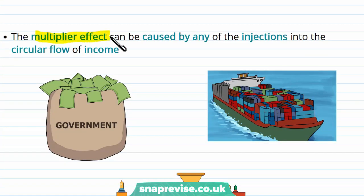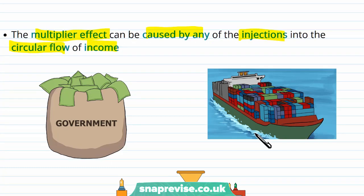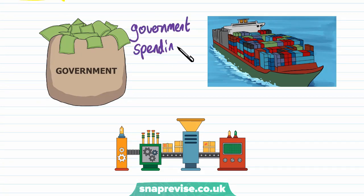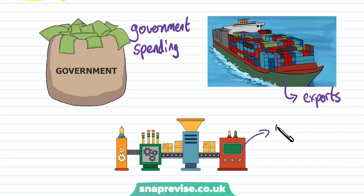The multiplier effect can be caused by any of the injections into the circular flow of income. These are: government spending, such as spending on housing infrastructure or benefit schemes; exports from the international market; and investment, which will result in more productivity and therefore more output, increasing the national income.